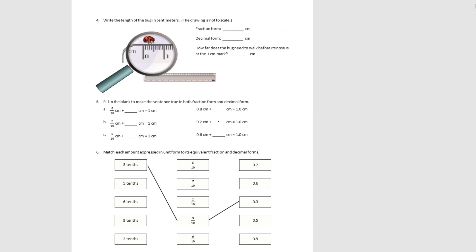Number four, we're looking at centimeters. We see our little bug is one, two, three, four, five tenths of a centimeter long — five tenths of a centimeter in decimal form. And how far will he need to walk before he reaches one centimeter? He would have to go five tenths of a centimeter more.